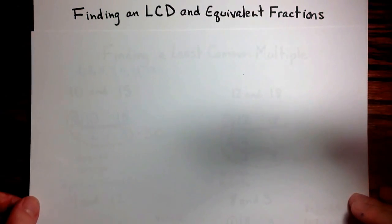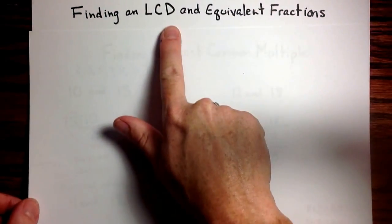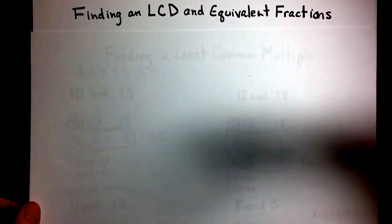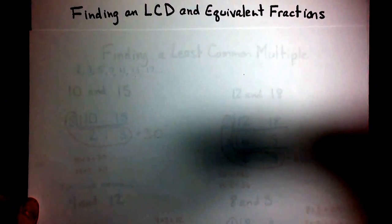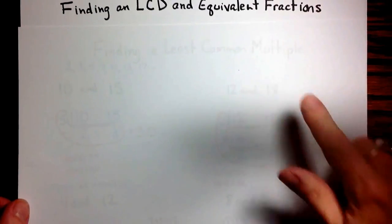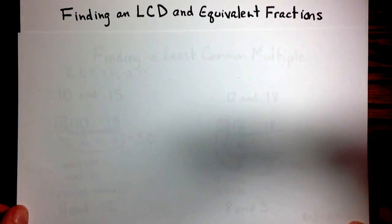This mini lecture covers finding a least common denominator, often abbreviated as LCD, and then using that least common denominator and the rules we learned for finding equivalent fractions to create equivalent fractions that have that common denominator.